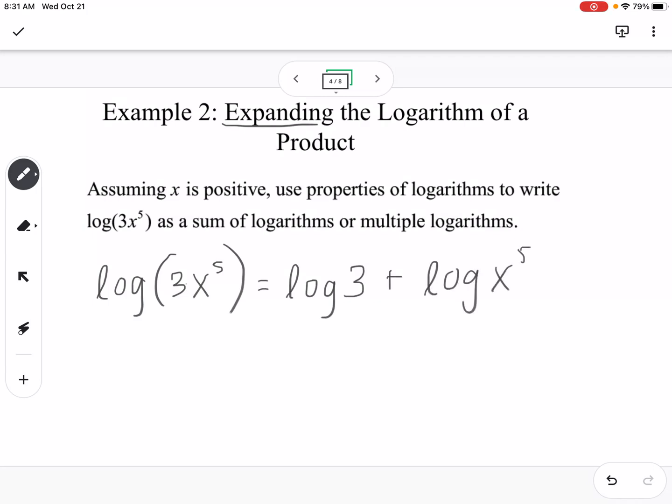And then finally, we have an exponent right here, so power rule can go out front as multiplication. So this would be log of 3 plus 5 log of x. So that would be our expanded form of that logarithm.